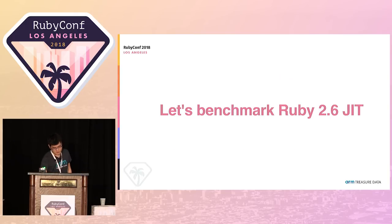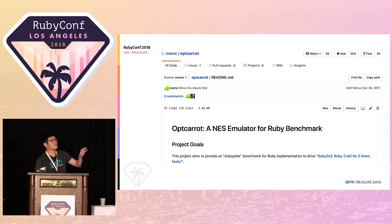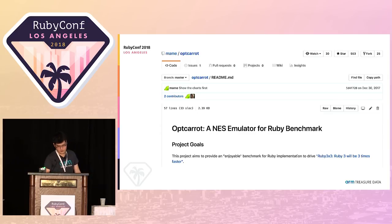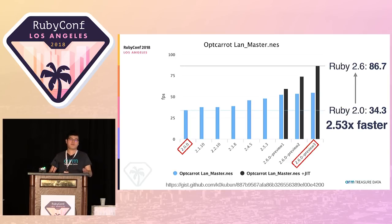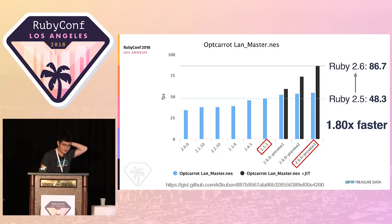When we benchmark it, there's a benchmark called OptCarrot, aimed at achieving Ruby 3x3 — three times faster Ruby 3 than Ruby 2.0. Basically it's a NES/Famicom emulator that achieves 20 frames per second on Ruby 2.0, and the goal is 60 frames per second in Ruby 3.0. On my machine, it already becomes 2.5 times faster with the JIT compiler, and it's even 1.8 times faster than Ruby 2.5.